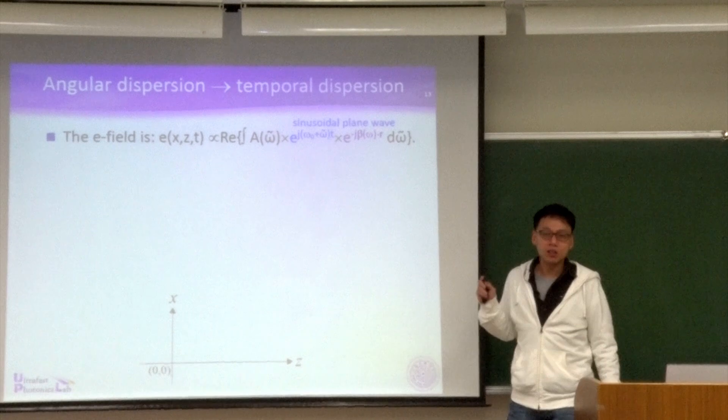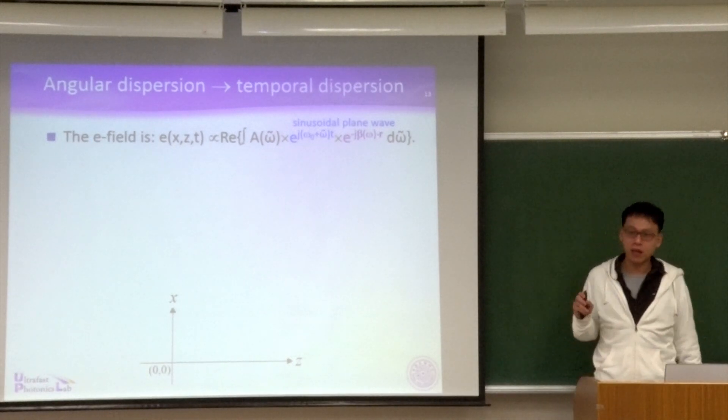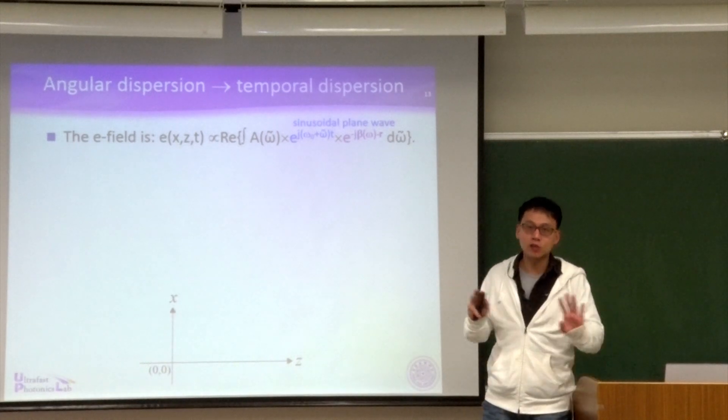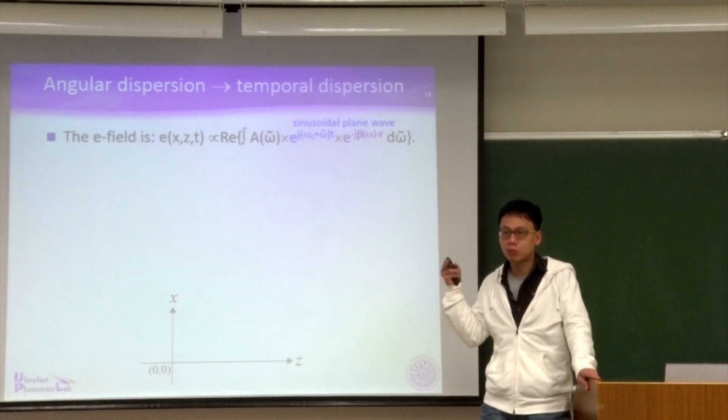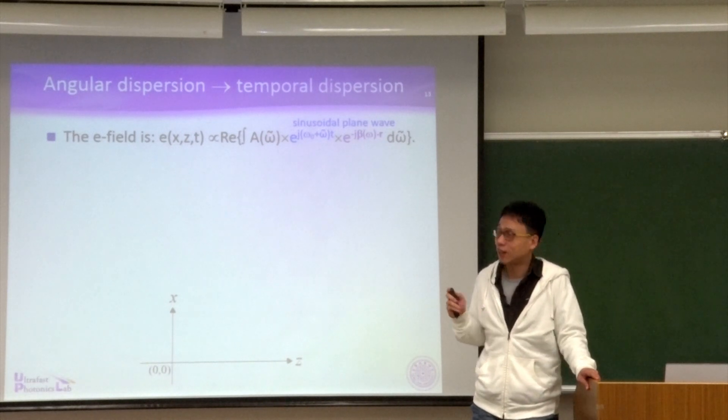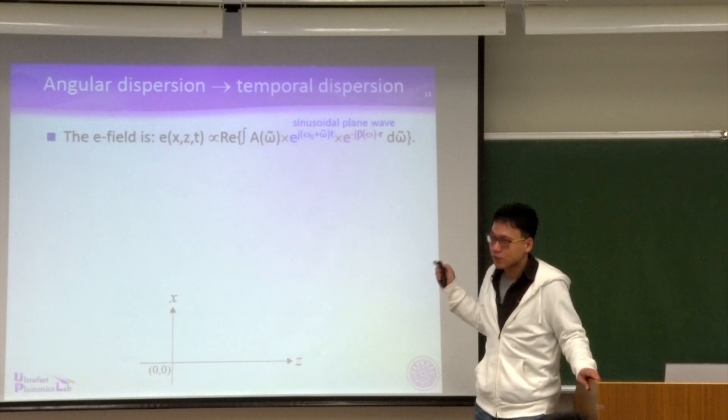Here, we need to talk about angular dispersion. So, this is necessary. Without this term, there is no angular dispersion. Every color propagates along Z direction. There is no angular dispersion. So, this is necessary.